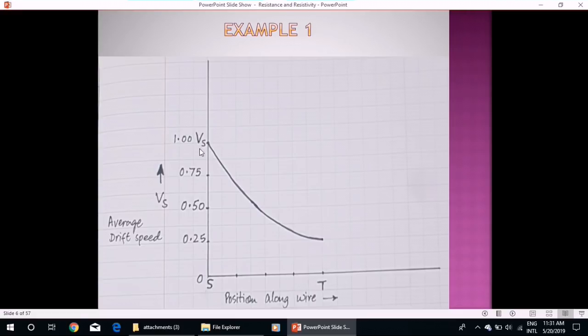If we plot a graph between position along wire between point S and T and we study the effect on drift speed, we can see that at S this value of drift speed, for example it is one unit, then at point T it will be one-fourth as we have calculated, so it will be 0.25. So the curve will have a decreasing gradient.